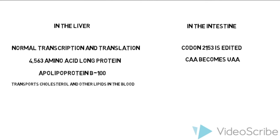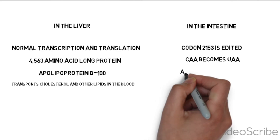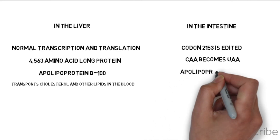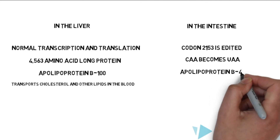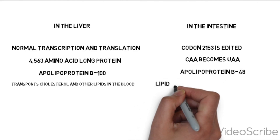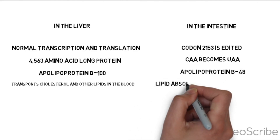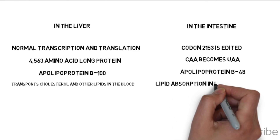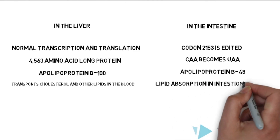So it switches that C to a U, and now it represents a stop codon and will stop translation at a 2,152 amino acid long protein called ApoLipoprotein B48, which rather than working to transport cholesterol and other lipids in the blood, now works in the absorption of dietary lipids from the intestinal lumen.